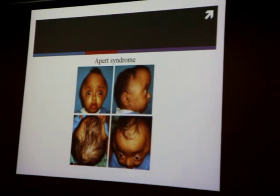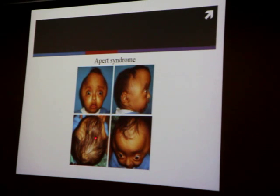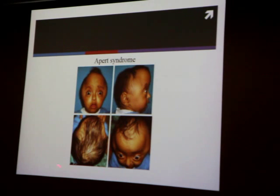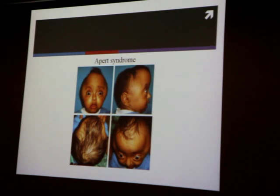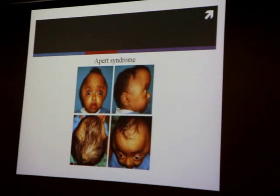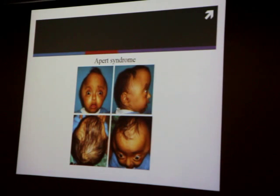This child has Apert Syndrome. Because of the cranial sutures fusing early, the only way the brain could go is forward — the forehead. You see the classic pattern: flat head from the back with a bulging, expanded forehead. Because the brain is pushing from behind, they have characteristic bulging eyes. Sometimes urgent surgery is needed to release the pressure inside the cranium and make everything return to normal.